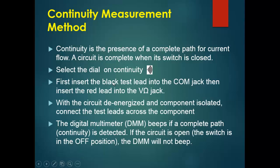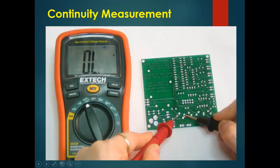With the circuit de-energized and the component isolated, connect the leads across the component. The procedure is the same as for resistance measurement. Do not check continuity in an energized circuit. The multimeter beeps or produces a sound if it finds a closed path. If the circuit is open, it will remain silent. As you can see, the meter is producing a sound and showing a resistance value of zero, confirming continuity.